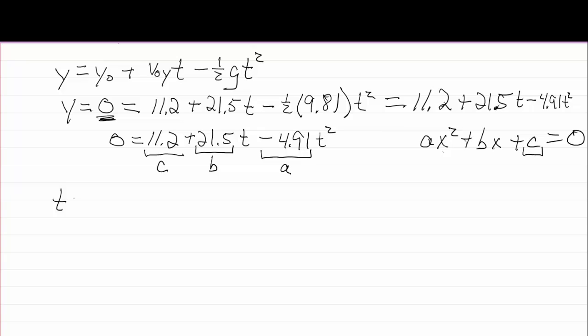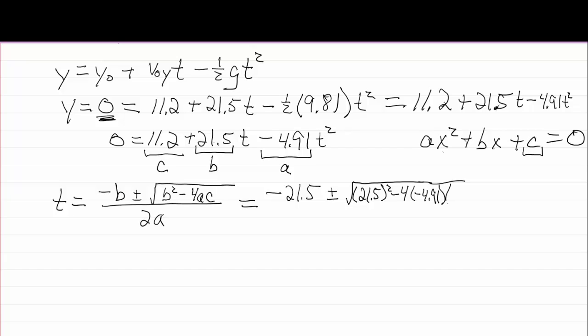Now in this case it's not going to be x that equals something, it'll be t that equals something. Because my variable is t and not x. Okay, I'll have a minus b, well b is 21.5 so I'll have minus 21.5 plus or minus that square root of 4 times minus 4.91 times c, 11.2. All over 2a which is 2 times.